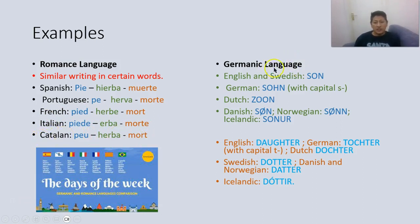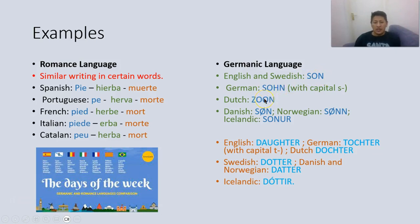In the Germanic language, here are the examples. In English and Swedish we say 'son.' In German, we say 'Sohn' with a capital letter, you see. In Dutch, they say 'zoon' or 'son.' It looks similar — son, son, son — because they are all coming from the Germanic language.